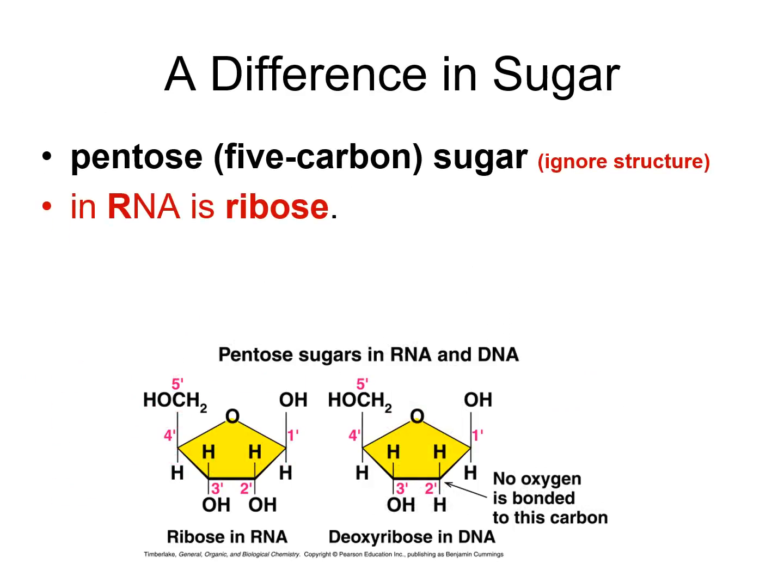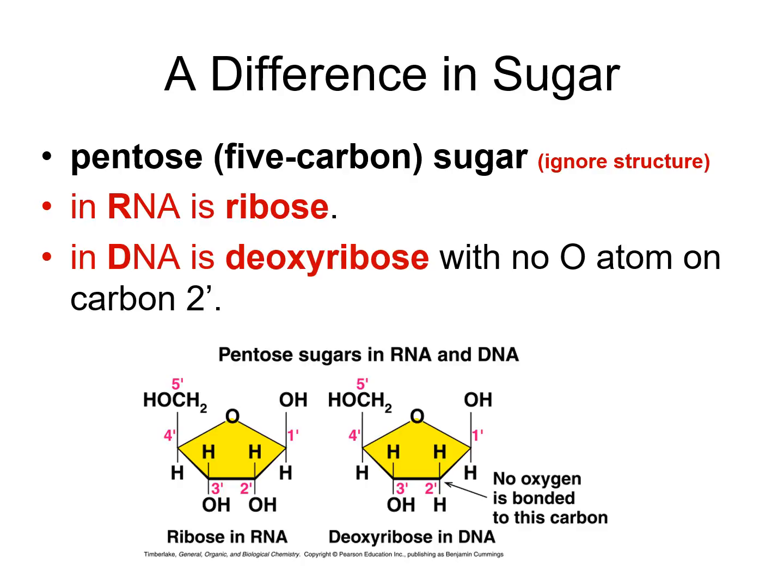There is a slight difference in the sugar between RNA and DNA. RNA uses a sugar called ribose and DNA uses deoxyribose — they look almost identical. The difference is at carbon number 2: ribose has an OH at carbon 2, whereas deoxyribose used in DNA does not have that OH — there is no oxygen bonded to the second carbon.